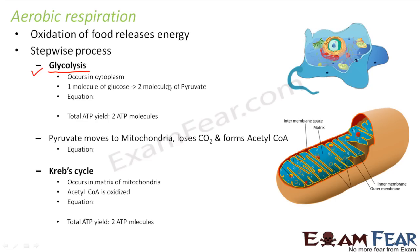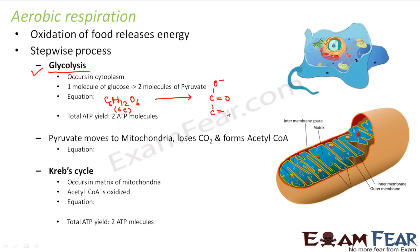Pyruvate is nothing but pyruvic acid. The glucose molecule, C6H12O6, is a six-carbon molecule. It gets converted into a simpler form — pyruvate, which is a three-carbon molecule. So one six-carbon glucose molecule is split into two three-carbon pyruvate molecules.